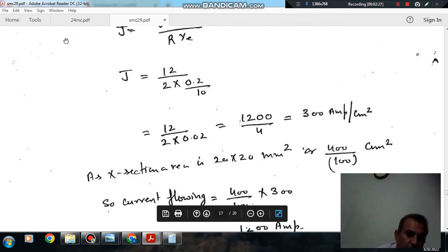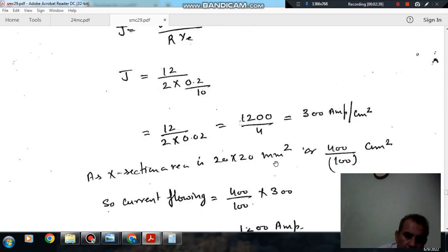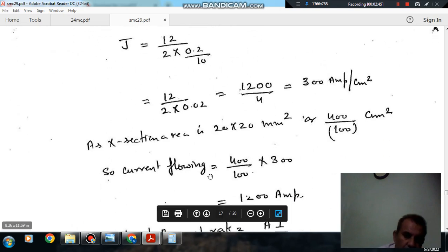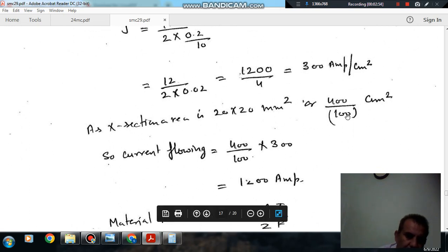And the cross section area of the cut on which the metal removal has been done is 20 by 20. So now this is your current density, this is your area, and so the current flow is 1200 ampere. Current density multiplied by area.